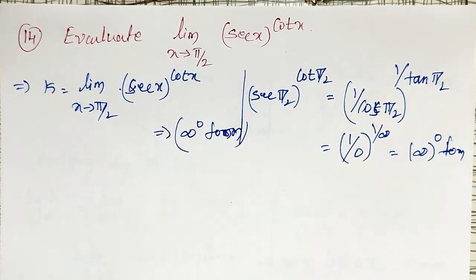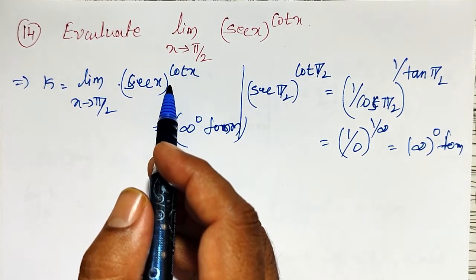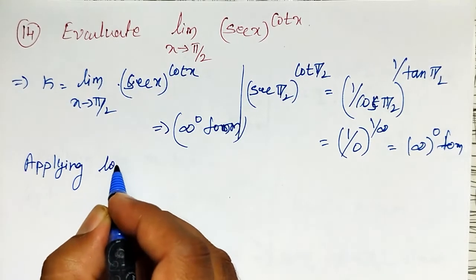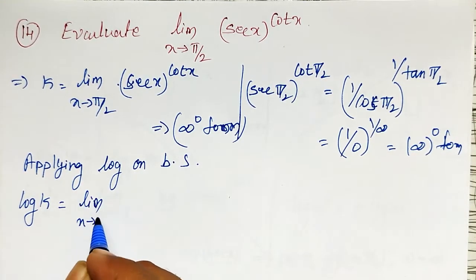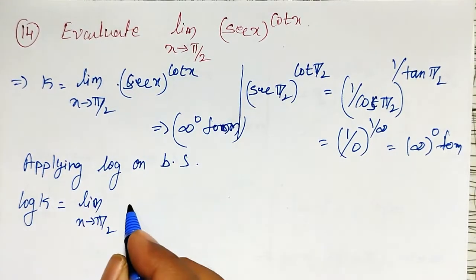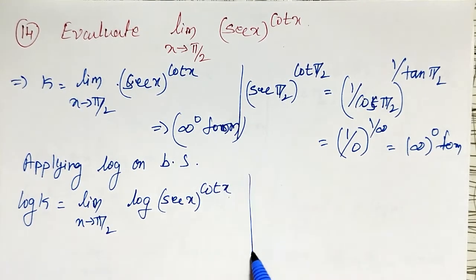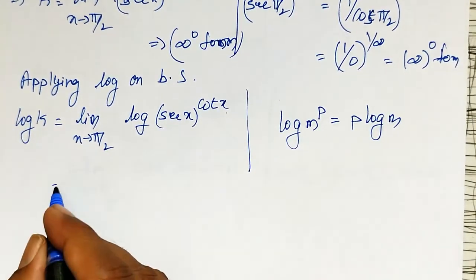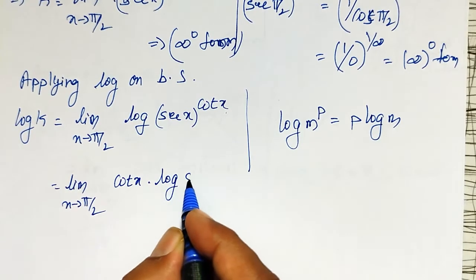As it is in the infinity raised to 0 form, I cannot evaluate it directly. I have to convert this into 0 by 0 form or infinity by infinity form. Since it is in the power form, I will apply log. Applying log on both sides, log k is equal to limit as x tends to pi by 2 of log of secant x raised to cot x. Using the property log(m^p) = p·log(m), I can write this as limit as x tends to pi by 2 of cot x into log of secant x.